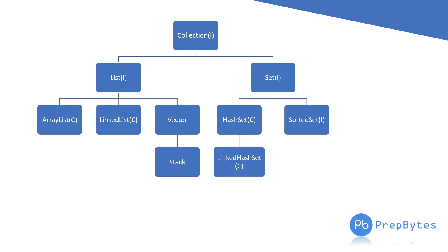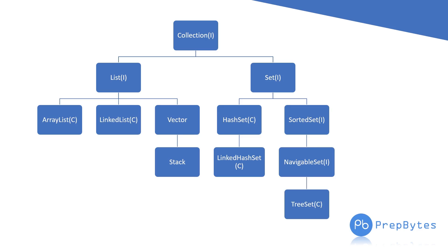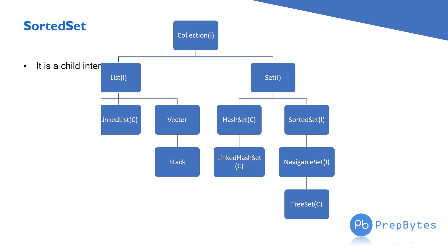Now we will see what is the SortedSet interface. SortedSet is a child interface of Set interface. Then we have another child interface of SortedSet which is NavigableSet, and the implementation class of SortedSet is TreeSet. TreeSet implements NavigableSet, SortedSet, Set, and Collection.